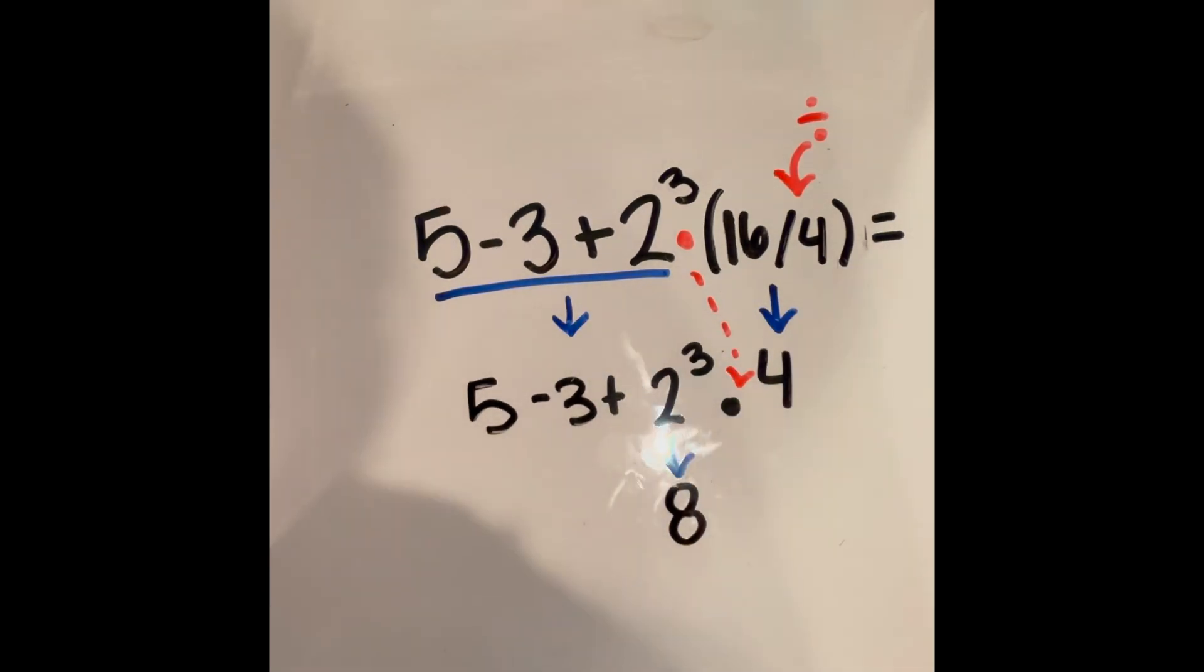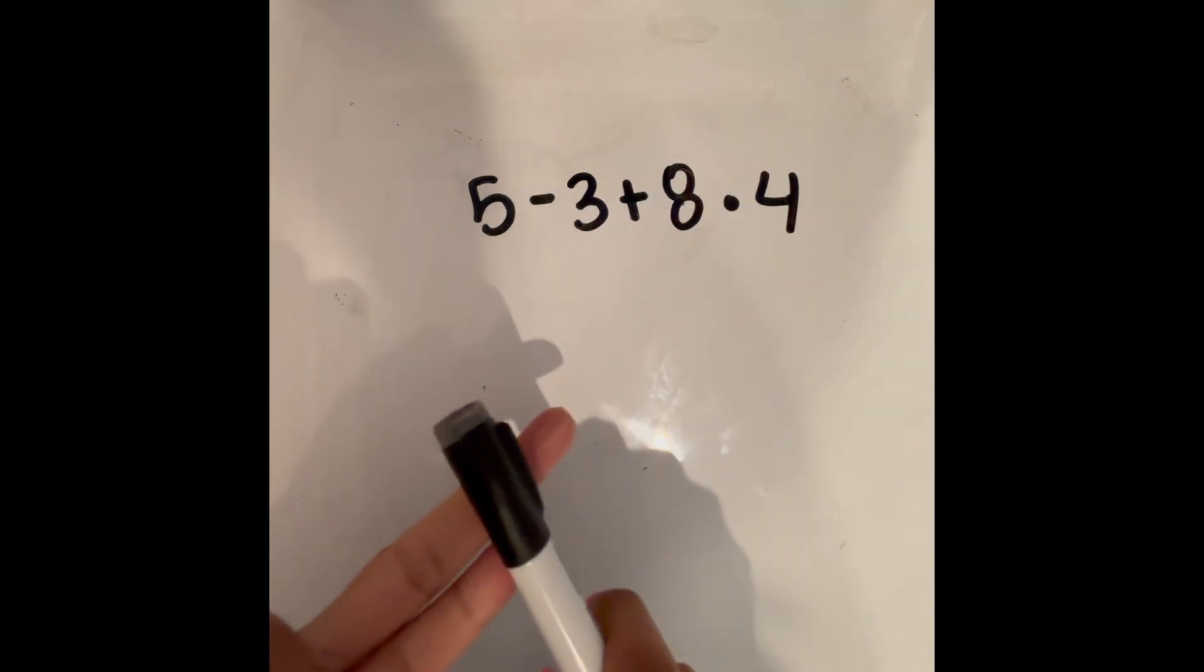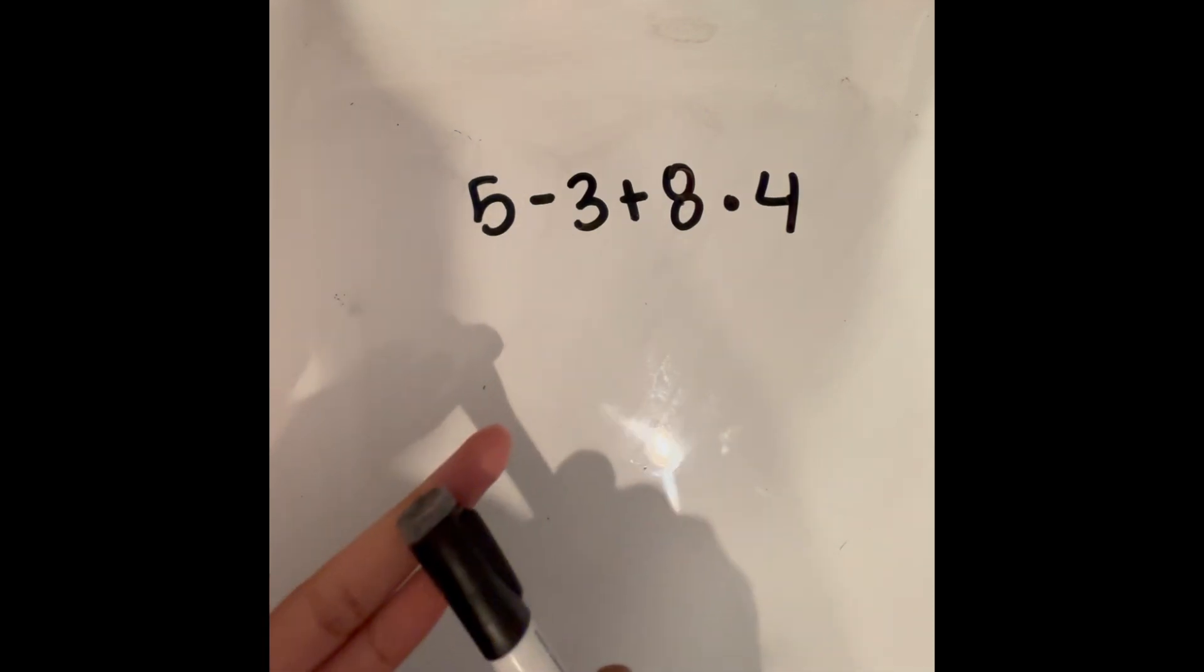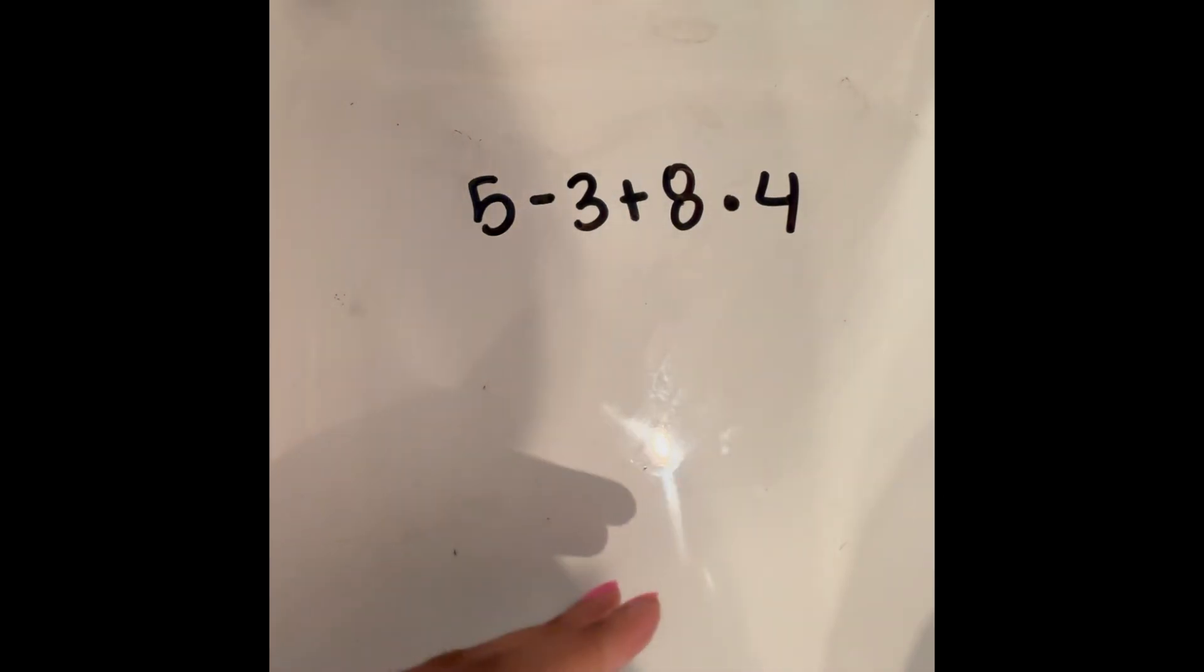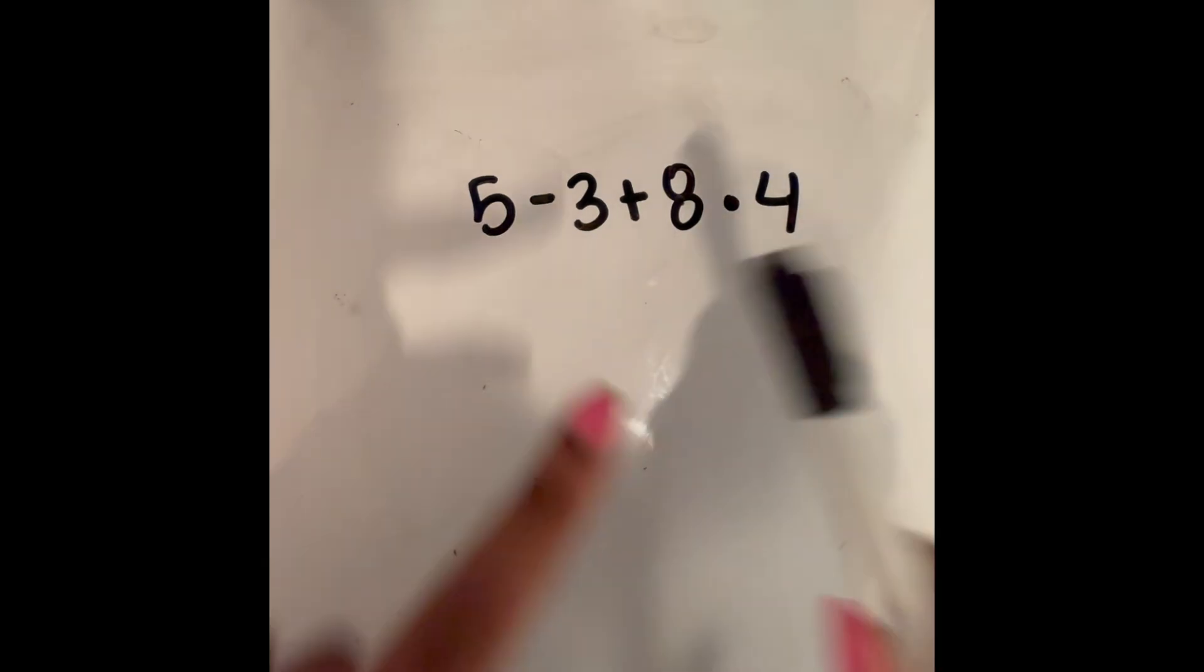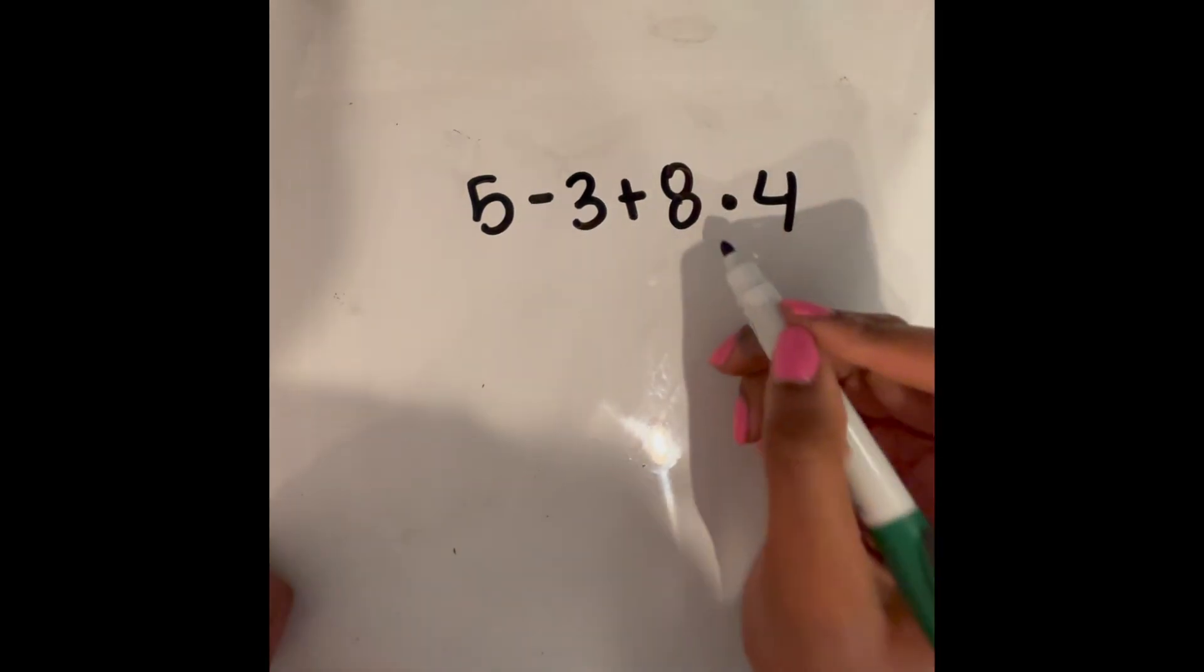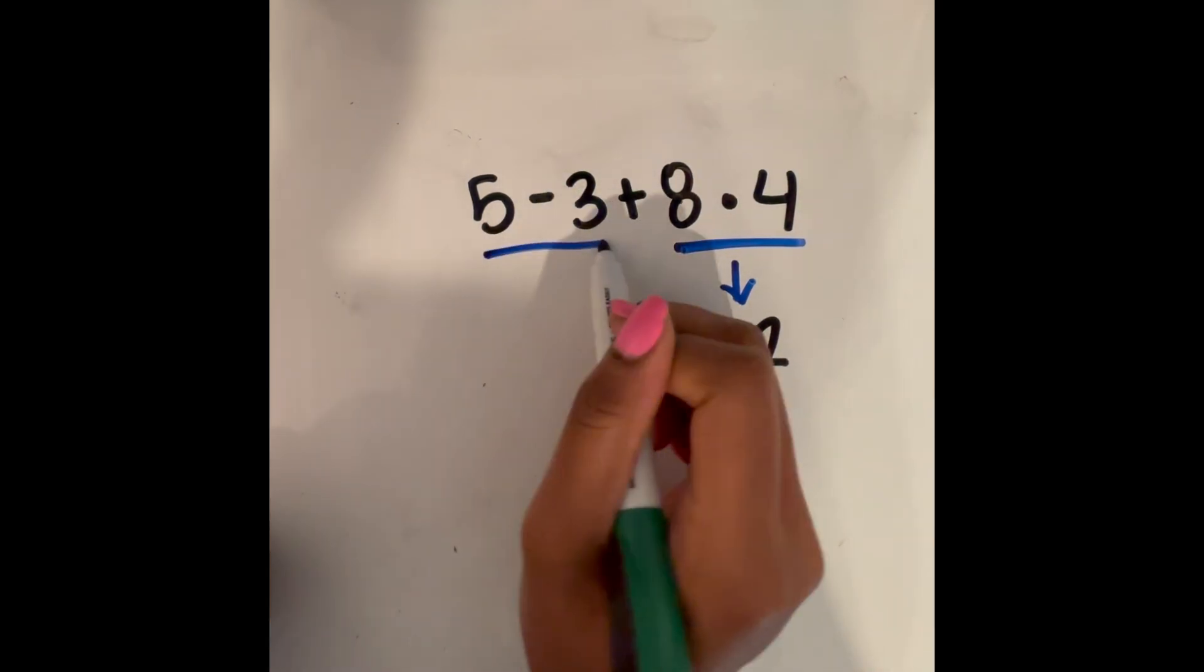And then again, we're just going to bring everything else down with that. So I'm going to go ahead and erase some of what I have just to give me some more space. So we did our parentheses, our groupings. We did our exponents. And now we need to go into multiplication and division. We don't have any division. So we'll just do multiplication here. And so we have 8 times 4. So 8 times 4, we know that is 32.